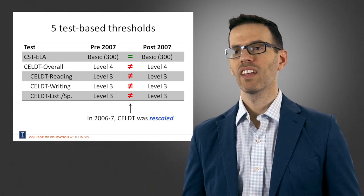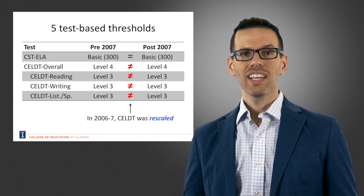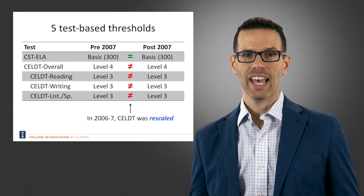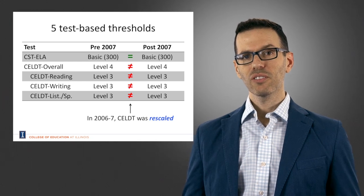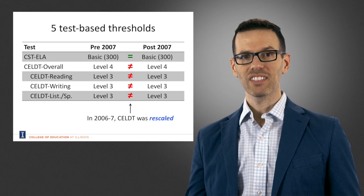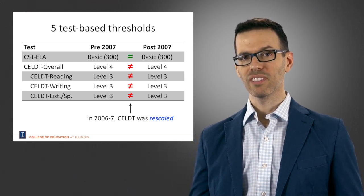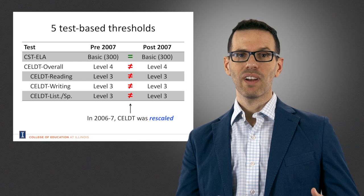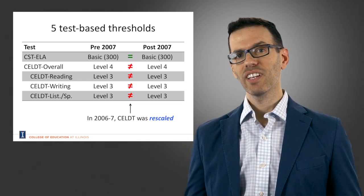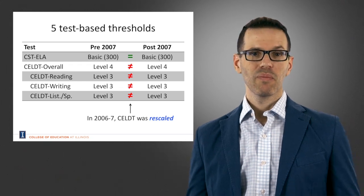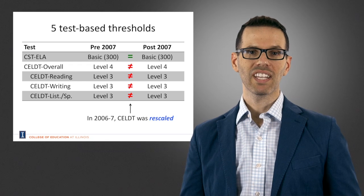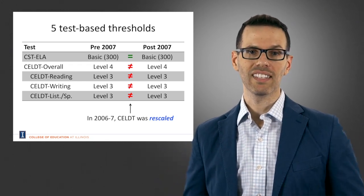The CST-ELA remains the same. The reason the CELT was made more difficult is partly due to teachers and administrators in California saying that English learners who were getting reclassified were not able to succeed in mainstream English classrooms without additional supports. They recognized that the criteria might be too low. California responded by examining this and ultimately rescaling the test to make it more difficult.